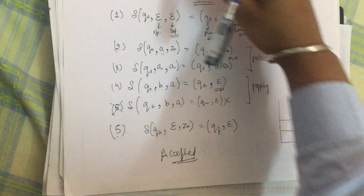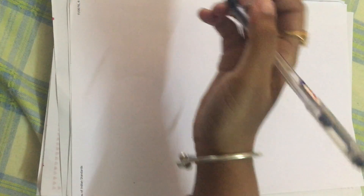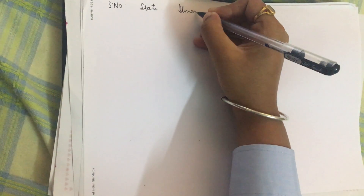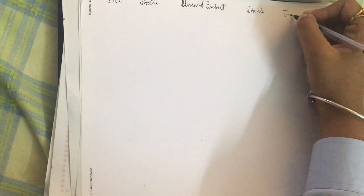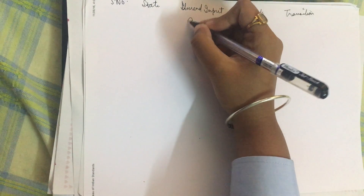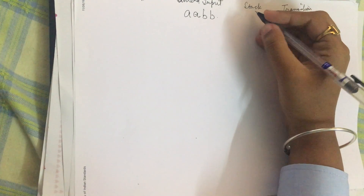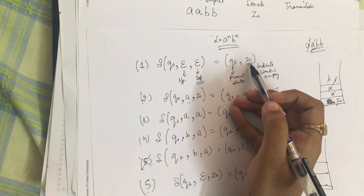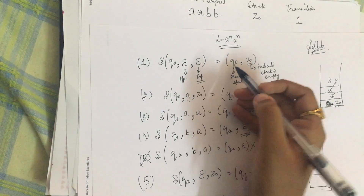Now we make a table. The columns are: serial number, present state, unread input, stack, and transition used. The unread input starts as 'aabb'. Initially the top of the stack has z naught, positioned using transition one. The present state is q naught. This is row one.